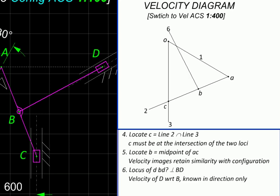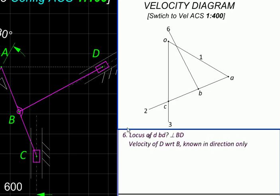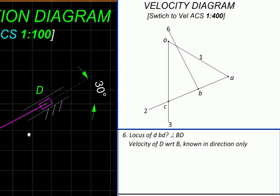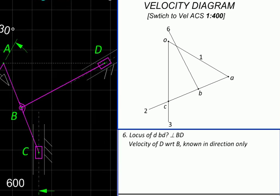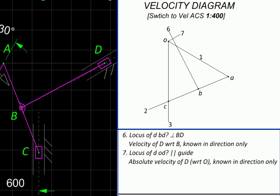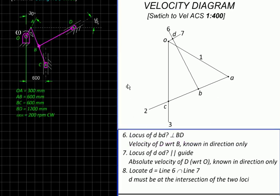That is our sixth line. And D is also constrained to slide in this slider whose angle is known, whose direction is known. So that is another locus we can plot. Since this guide is fixed, it is relative to O. Wherever these two intersect, that is our point D. So we have essentially finished the velocity diagram because we have found the velocity image of every point in the space diagram over here.